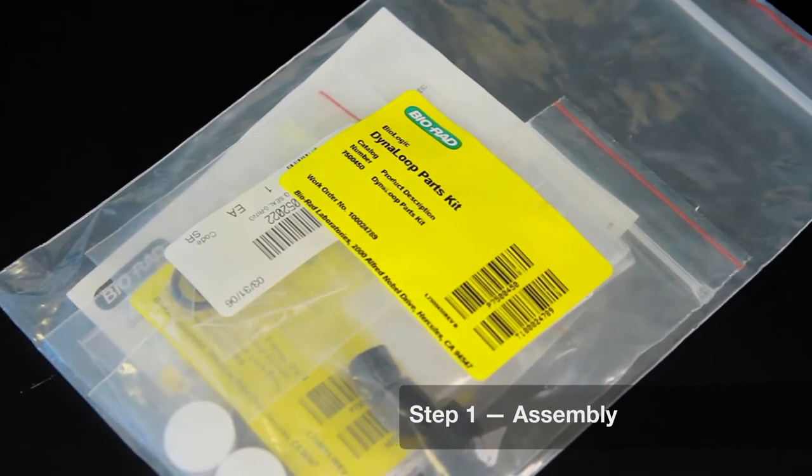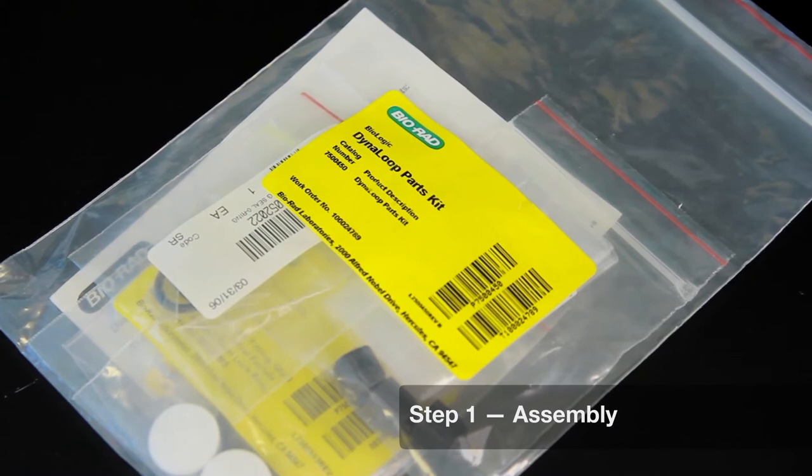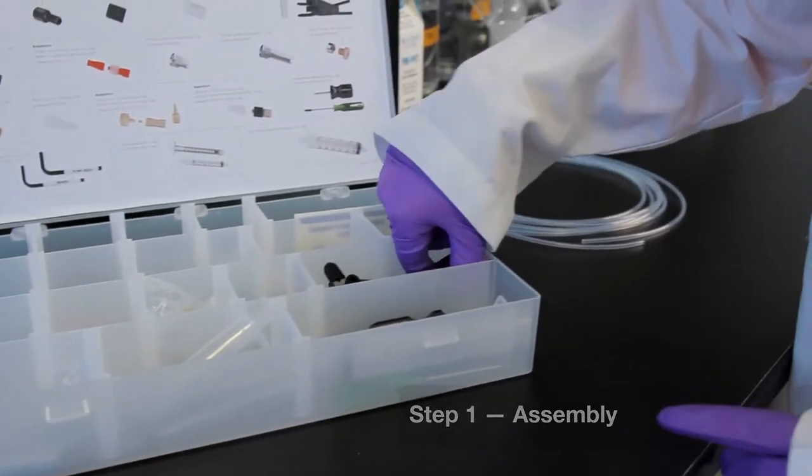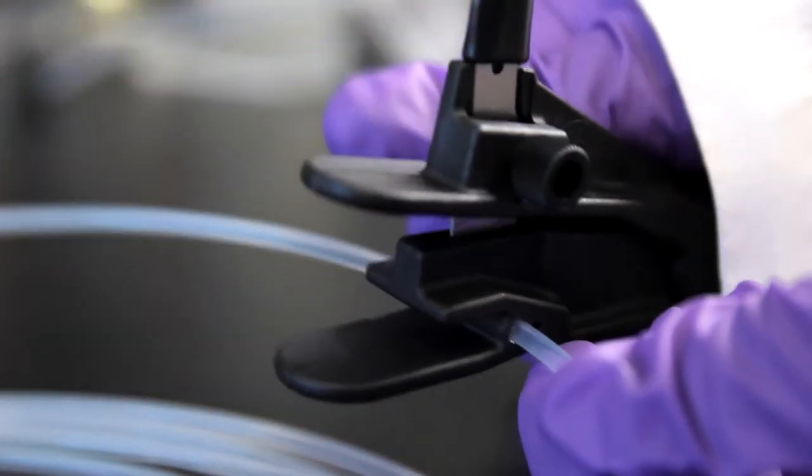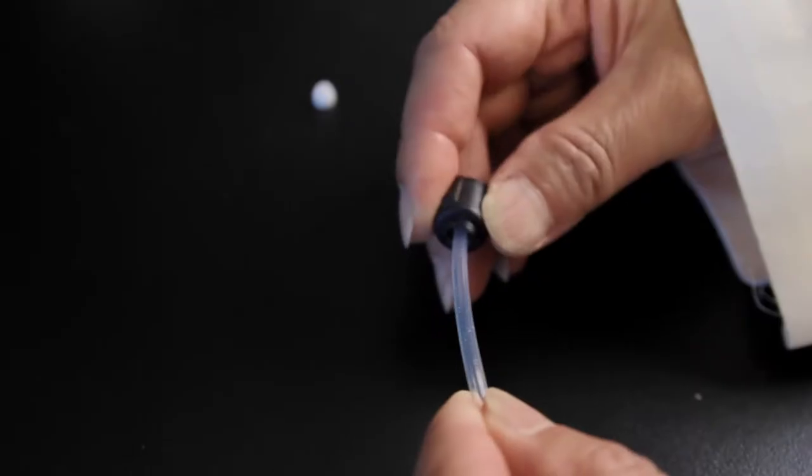We'll begin by assembling the Dyna Loop using the provided Dyna Loop Parts Kit. First, you'll blunt cut a piece of 1 1/8 inch tubing to the desired length using the tubing cutter from the NGC Fittings Kit.